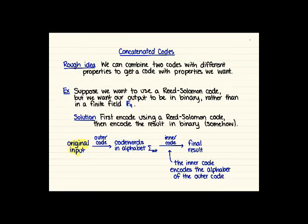So the solution to this is that we're first going to encode using a Reed-Solomon code and then take the result and somehow encode that in binary. We can think of this as taking some original input, applying the outer code, which is the Reed-Solomon code.